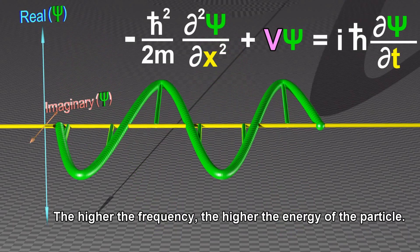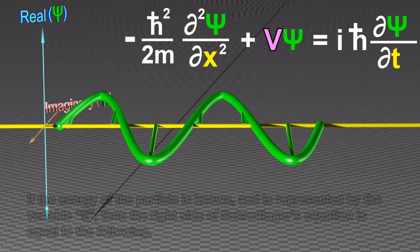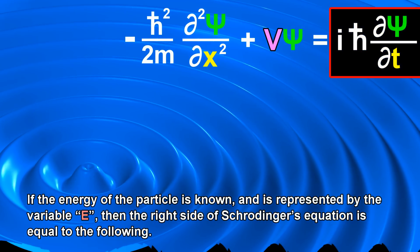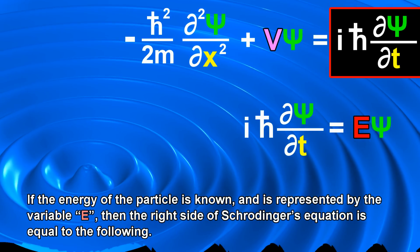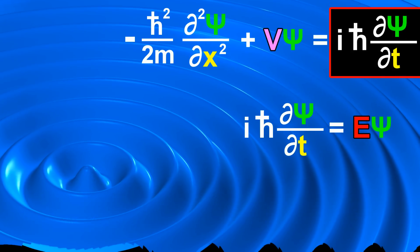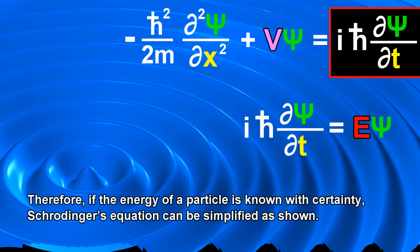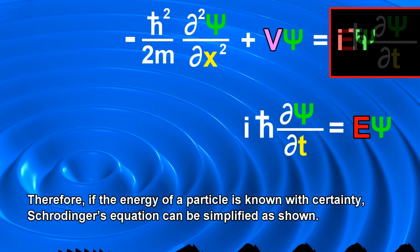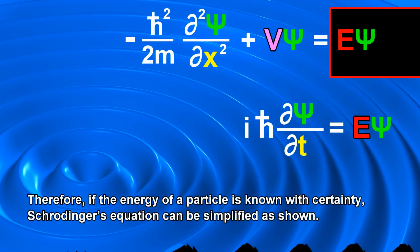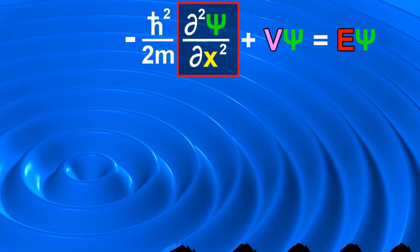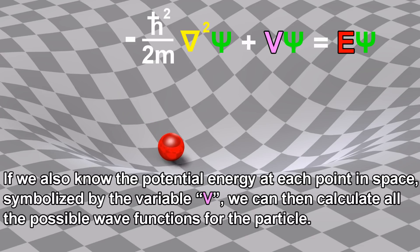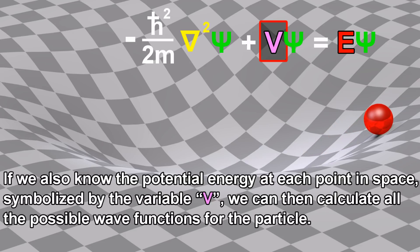The higher the frequency, the higher the energy of the particle. If the energy of the particle is known and is represented by the variable E, then the right side of Schrödinger's equation is equal to the following. Therefore, if the energy of a particle is known with certainty, Schrödinger's equation can be simplified as shown. If we also show the potential energy at each point in space, symbolized by the variable V, we can then calculate all the possible wave functions for the particle.